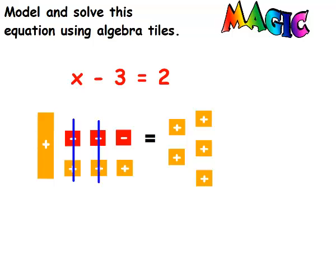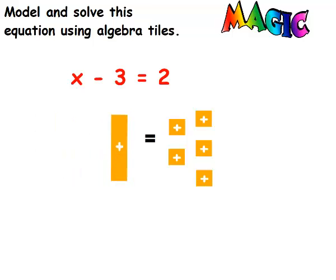And now I'm going to get rid of all the zero pairs I see — there, there, and there. Once the zero pairs are gone, they're gone. x equals 5. Always plug in your answer into the original problem and make sure it works. 5 minus 3 does equal 2.